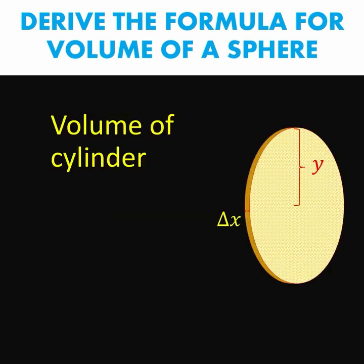Our disk is a cylinder. The base is circular and the height is denoted by this thickness which is delta x. And we know that the formula to compute the volume of a cylinder is the area of the base times the height.